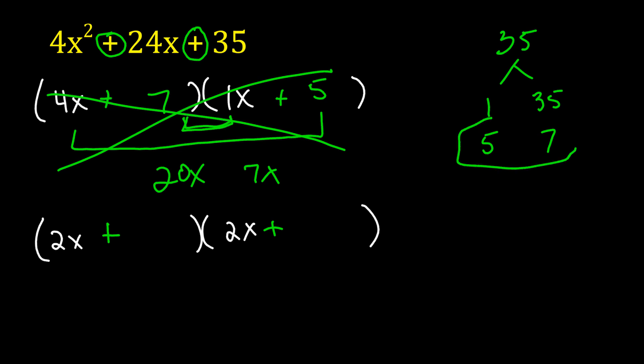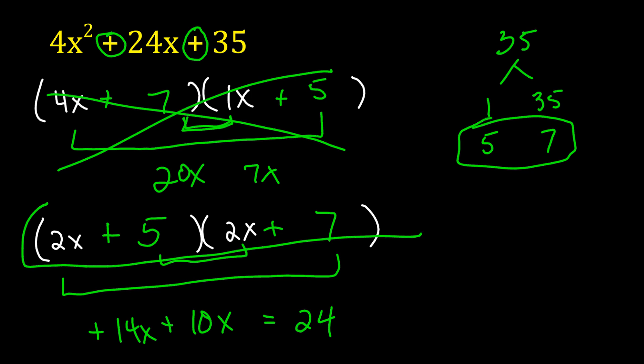I'm guessing it's going to be 5 and 7, so let's try that. The nice thing about this is it doesn't matter where I put the 5 and the 7 because they're both 2x's. So 2x times 7 is 14x. 5 times 2x is 10x. Is 14x plus 10x equal to 24x? It sure is. So there are our factors. 2x plus 5 and 2x plus 7.